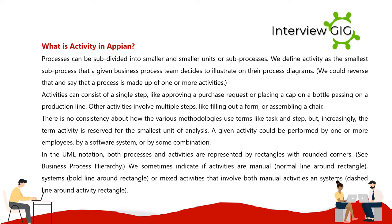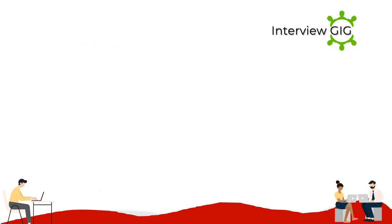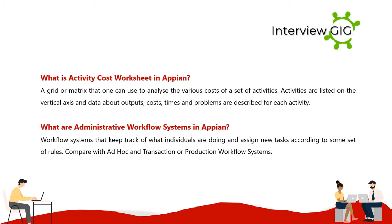We sometimes indicate if activities are manual (normal line around rectangle), systems (bold line around rectangle), or mixed activities involving both manual and systems components (dashed line around the activity rectangle). What is an activity cost worksheet in Appian? It is a grid or matrix used to analyze the various costs of a set of activities. Activities are listed on the vertical axis and data about outputs, costs, times, and problems are described for each activity.